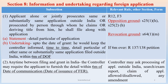The applicant must file: A) a statement with detail particulars of the application, and B) an undertaking that up to the grant of the patent, he would keep the controller informed from time to time about the detail particulars of other same or substantially same applications filed outside India within 6 months of date of filing. The rule that complies with section 8 is Rule 12, and the form through which the applicant will furnish the statement and undertaking is Form 3.